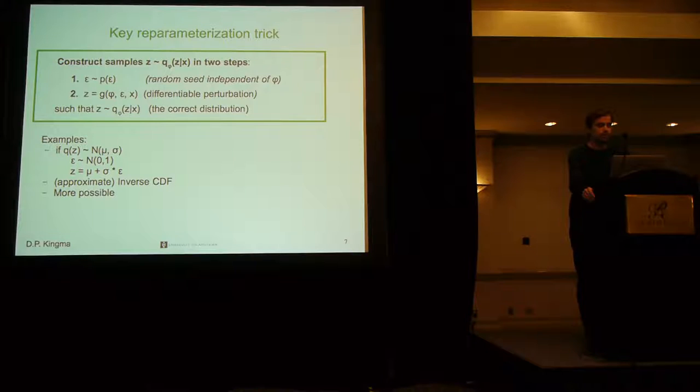The key reparameterization trick we're going to use is as follows. Instead of directly sampling from Q, we will perform the sampling step in two stages. First we will sample from some marginal over epsilon, which is something we choose, and then we perturb the sample from epsilon in such a way that we will obtain a sample from Q. The cool thing is that by sampling from Q in this way, we can actually compute gradients through the sampling process with respect to phi, and we can simply perform standard gradient descent. This perturbation technique can be performed for a lot of distributions.